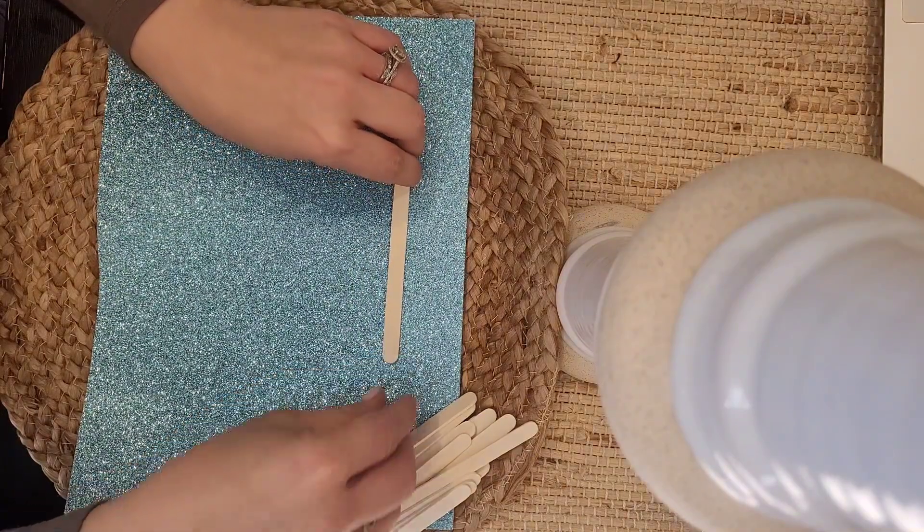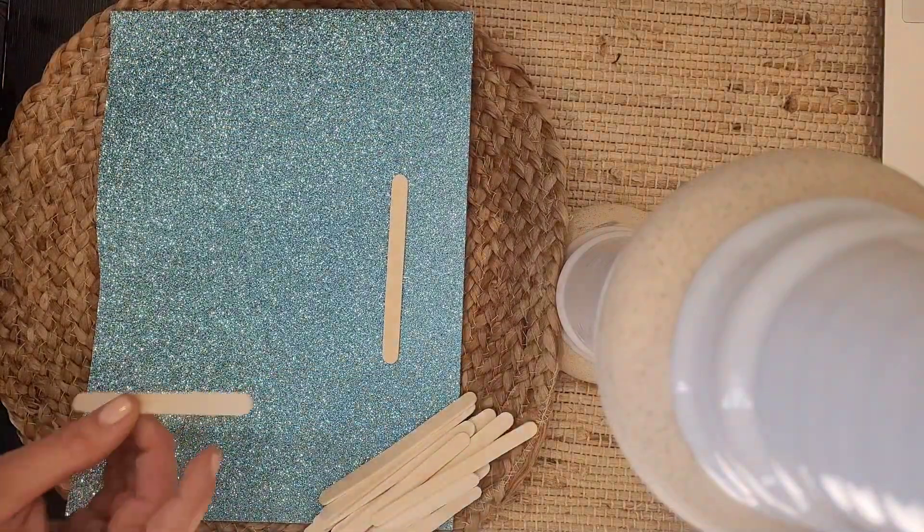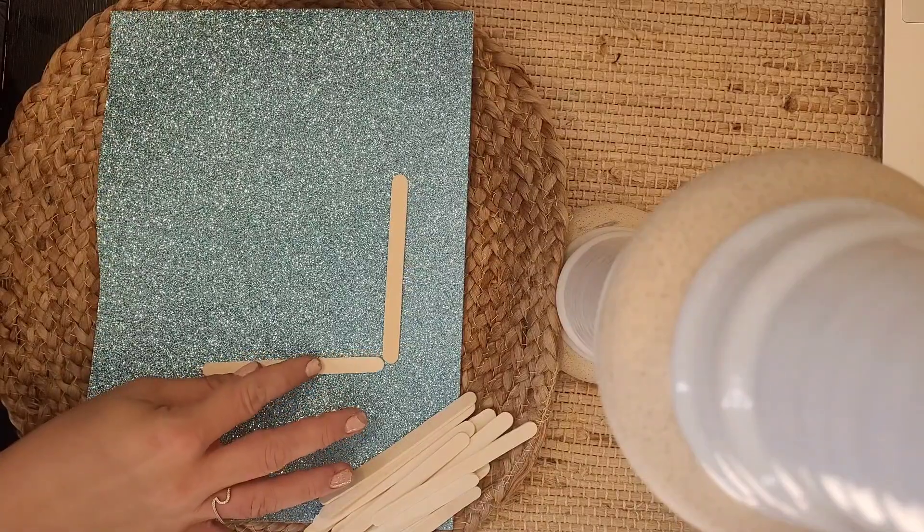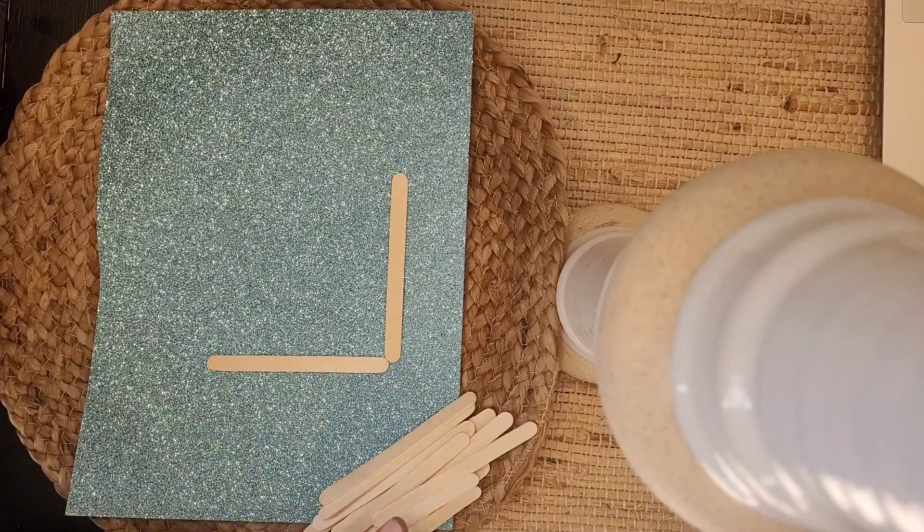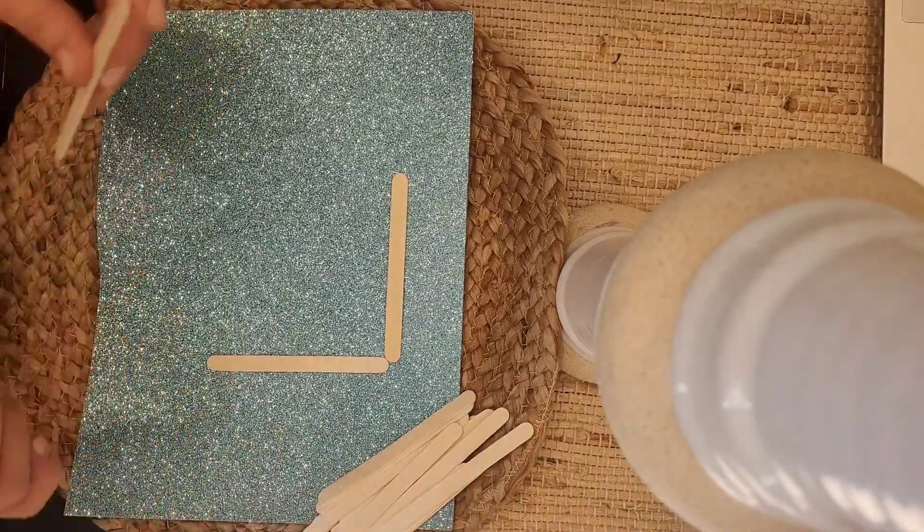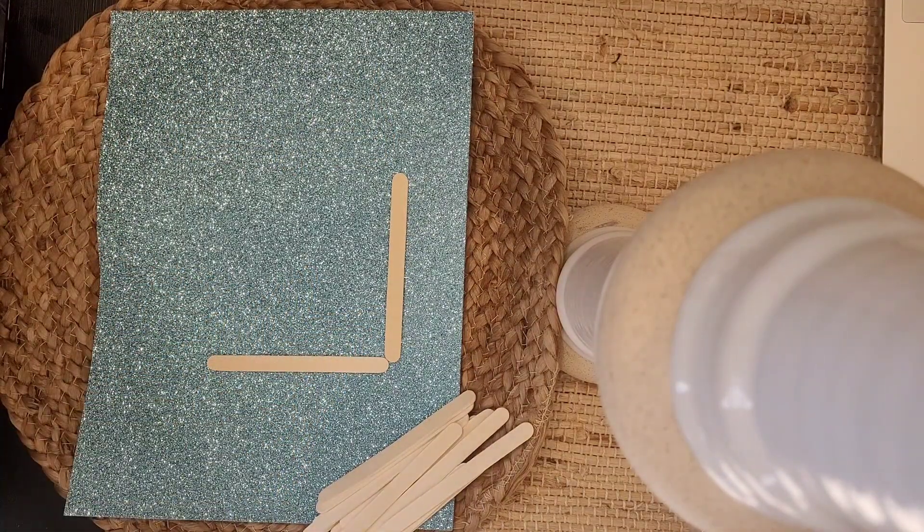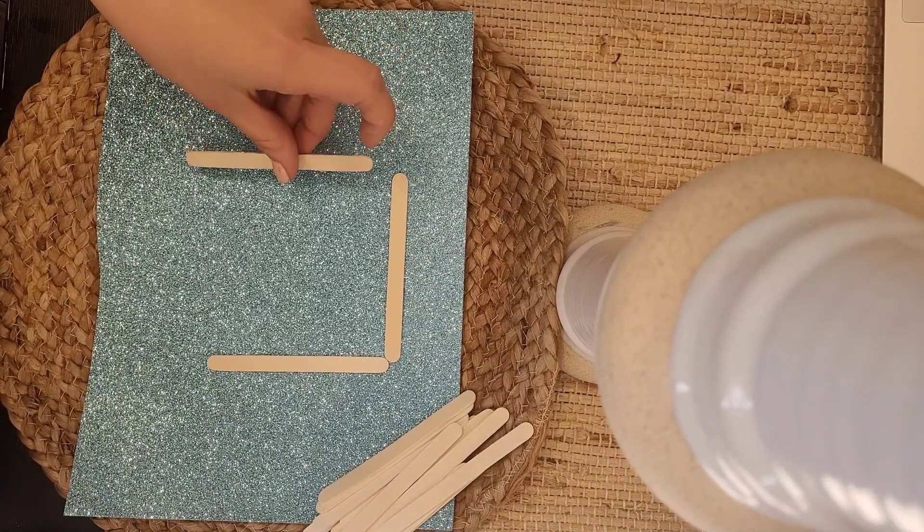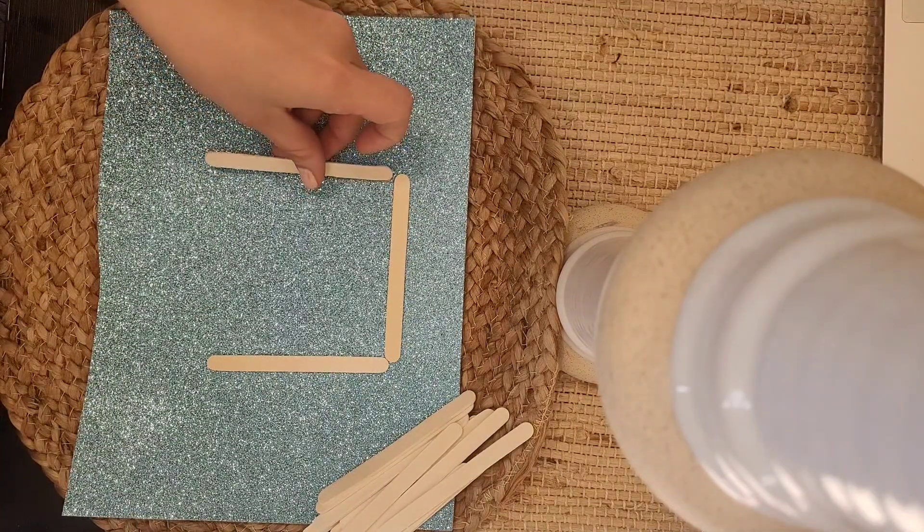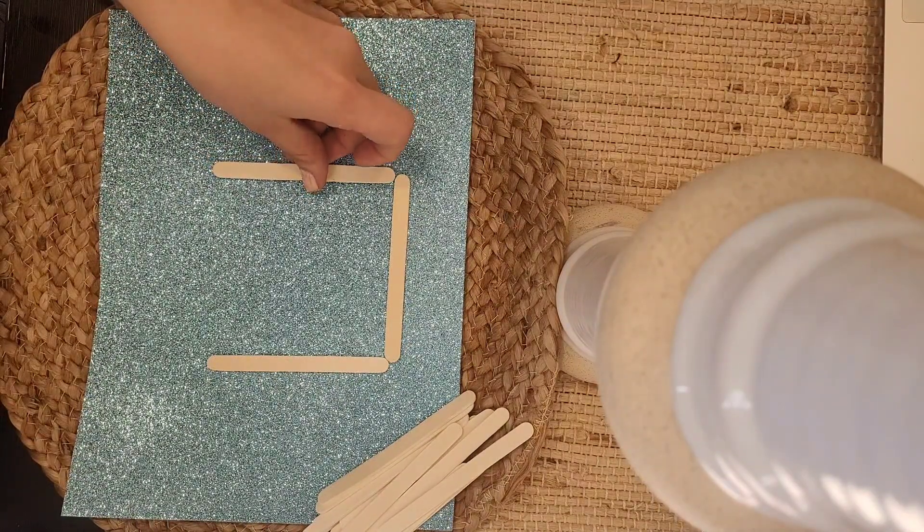So I'm going to take one popsicle stick. And then we'll take another popsicle stick. How many popsicle sticks do I have? One, two. And how many sides does a square have? Four.